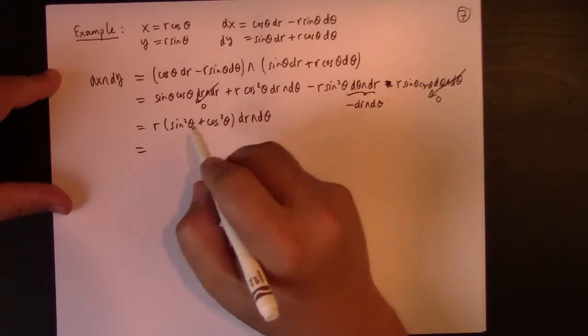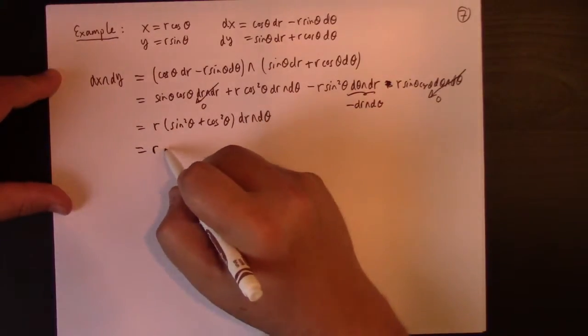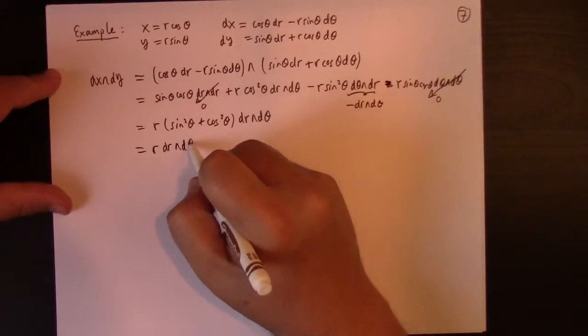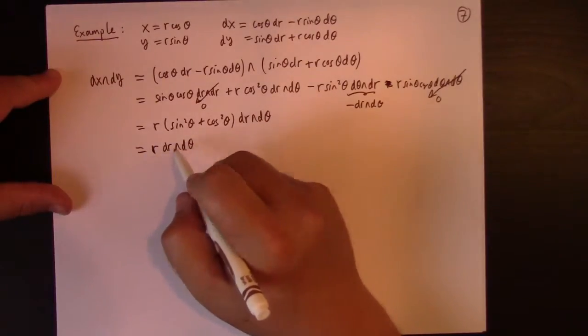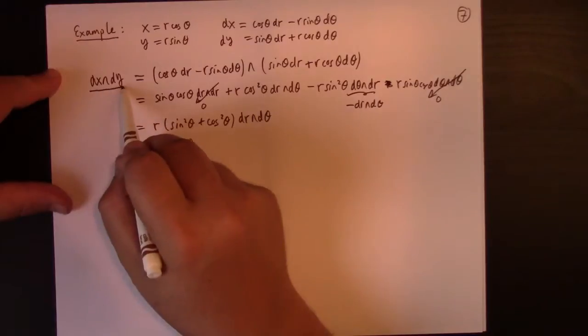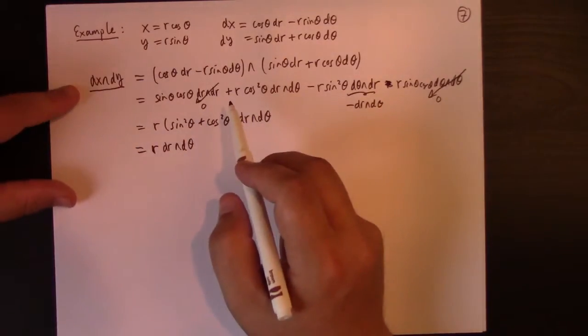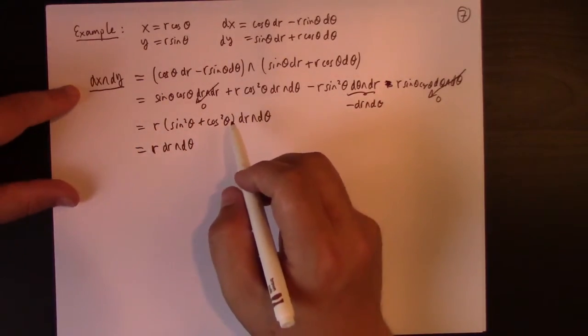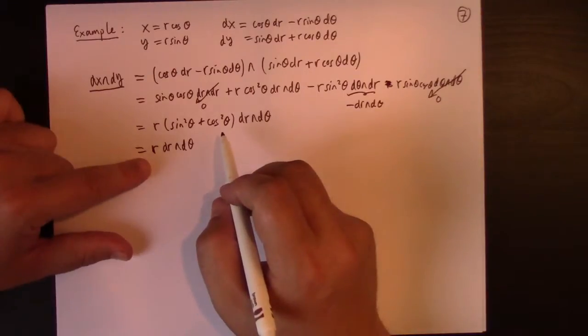Which, of course, simplifies to R dr wedged d theta. Of course, you should recognize this as being, so this is basically like the area element, right? And this is the area element in polar coordinates.